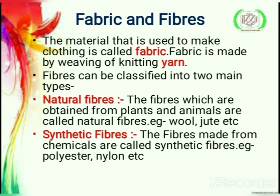Fibers can be classified into two main types. First, natural fibers — the fibers which are obtained from plants and animals are called natural fibers, for example wool and jute. Second, synthetic fibers — the fibers made from chemicals are called synthetic fibers, for example polyester and nylon.